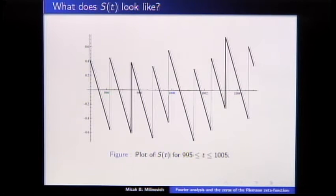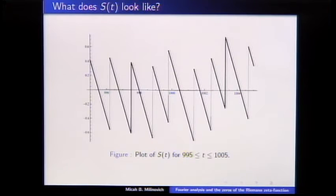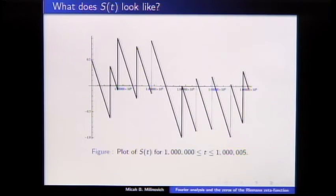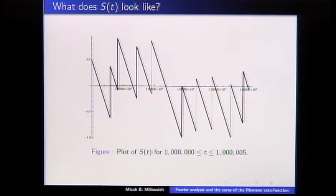If you go to an interval of length 10 around 1,000, you can see the zeros are getting more dense, growing like t log t, but S(t) is still staying fairly small. Now going to an interval of length 5 around 1,000,000 — the zeros are still more dense and it's getting a little more erratic, but still pretty small.